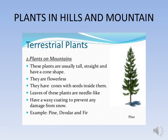The next type of terrestrial plant is plants in hills or mountains. The climate in such places is cold and snowfall is frequent. Trees growing here are usually tall, straight, and have a cone shape. These features allow the snow to easily slide off the branches. They are usually flowerless and have cones with seeds inside them. The leaves of these trees are needle-like and have a waxy coating to prevent any damage from snow. Examples are pine, fern, and mosses.